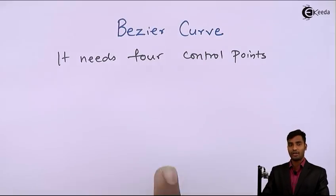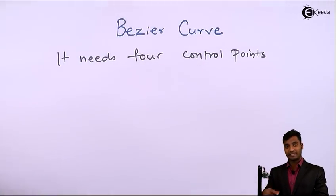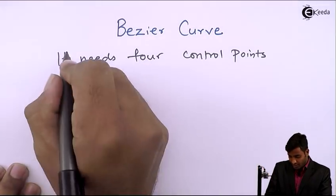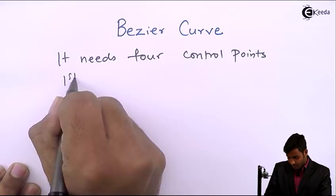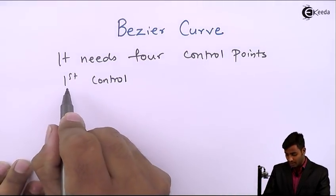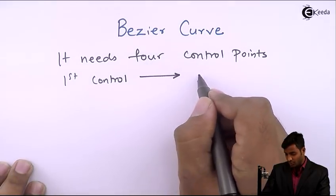These 4 control points specify the Bezier curve. The curve starts from the first control point and ends at the fourth control point.